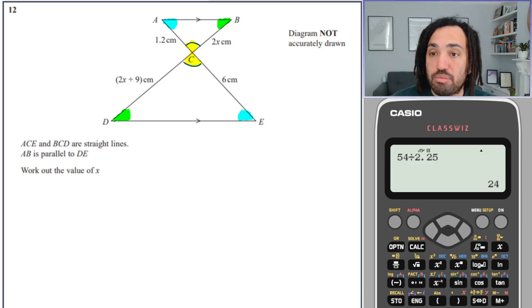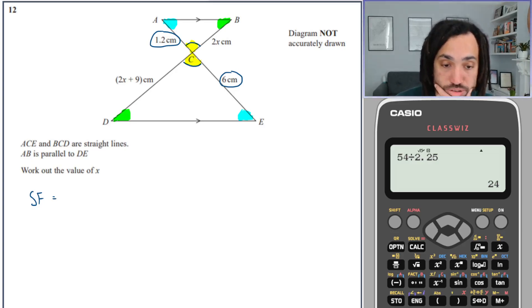I've done that now because it helps me figure out which are the two corresponding sides. So this side here is in between the yellow and the blue, and this one over here is also in between the yellow and the blue, which means they must be corresponding. So the scale factor is 6 over 1.2, which is equal to 5.